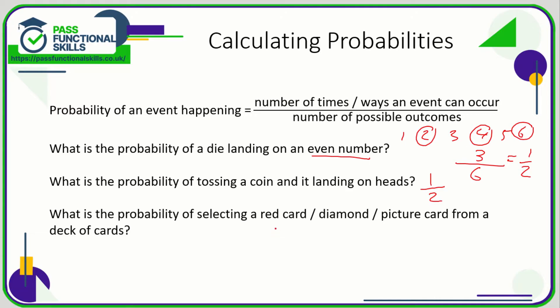What's the probability of selecting a red card from a pack of cards? Cards are either red or black, so that's one out of two. What's the probability of selecting a diamond? There are four suits — diamonds, hearts, spades, and clubs — and only one of them is diamonds, so that is one quarter.